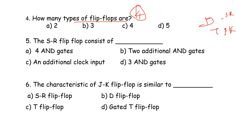In the SR flip-flop, the JK flip-flop consists of two additional AND gates at the S and R inputs of the SR latch. The correct answer is two additional AND gates — option B is the correct answer.